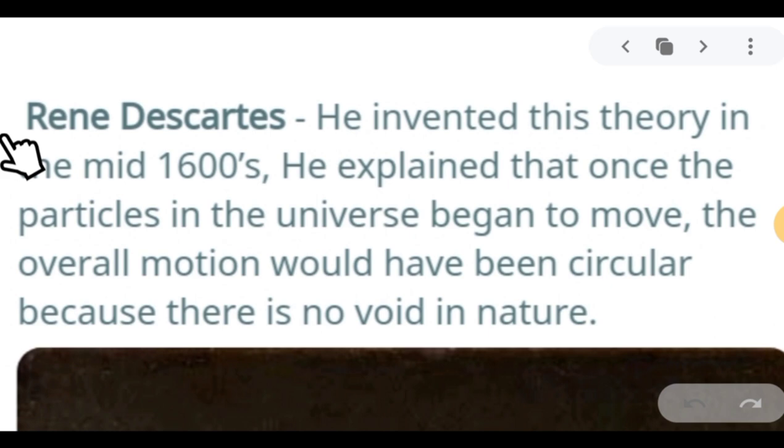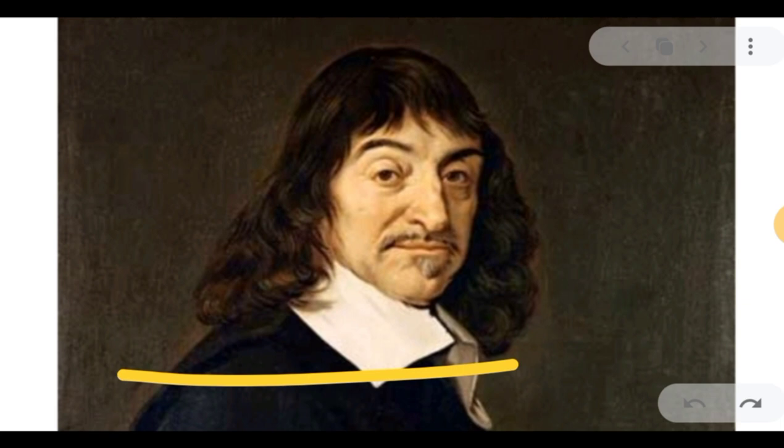This idea was proposed by René Descartes, who invented this theory in the mid-1600s. He explained that once the particles in the universe began to move, the overall motion would have been circular because there is no void in nature. According to him, the path of the orbit is circular, but today, according to study, the path of the orbit is an oblate spheroid instead of a perfect circle.